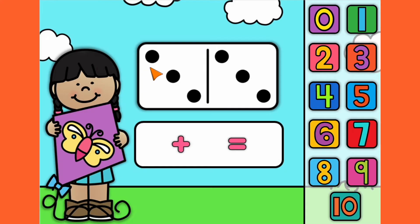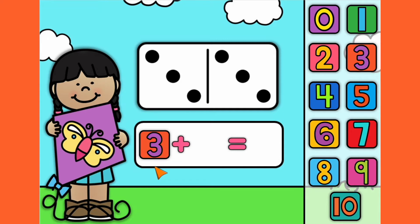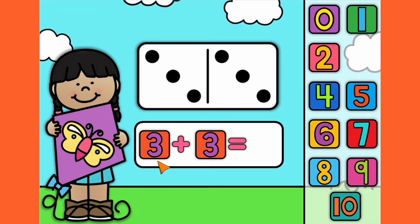Number 1. We will count the dots on each side of the domino and then drag the numbers to create an equation and find the answer. 1, 2, 3. Now let's count the numbers on the right-hand side. Ready? 1, 2, 3. Our equation is 3 plus 3 equals...